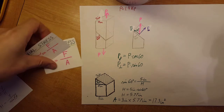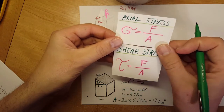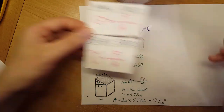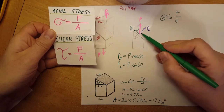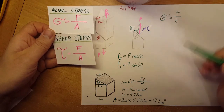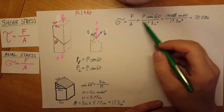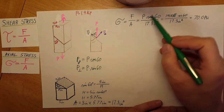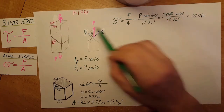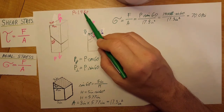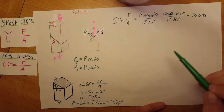Now we can apply the stress formulas. For normal (axial) stress, it's force over area — the perpendicular force component over the glue area. The force is P times sine 60, with P equal to 1.4 kips, which we convert to 1,400 pounds. Dividing by 17.3 inches squared gives us a normal stress of 70 psi.